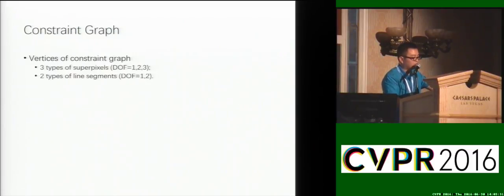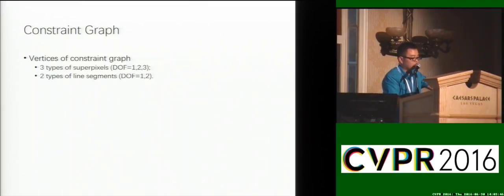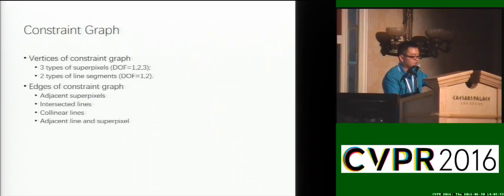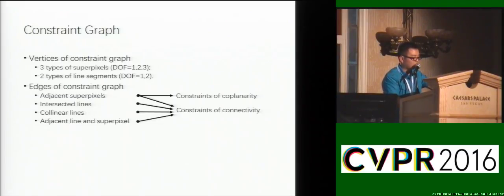Now we have built the constrained graph. According to the different degrees of freedom imposed by different orientation restrictions, the vertices of the constrained graph can be grouped into five types, including three types of superpixels and two types of line segments. The edges of the graph can be further divided into two types: the constraints of coplanarity and the constraints of connectivity.